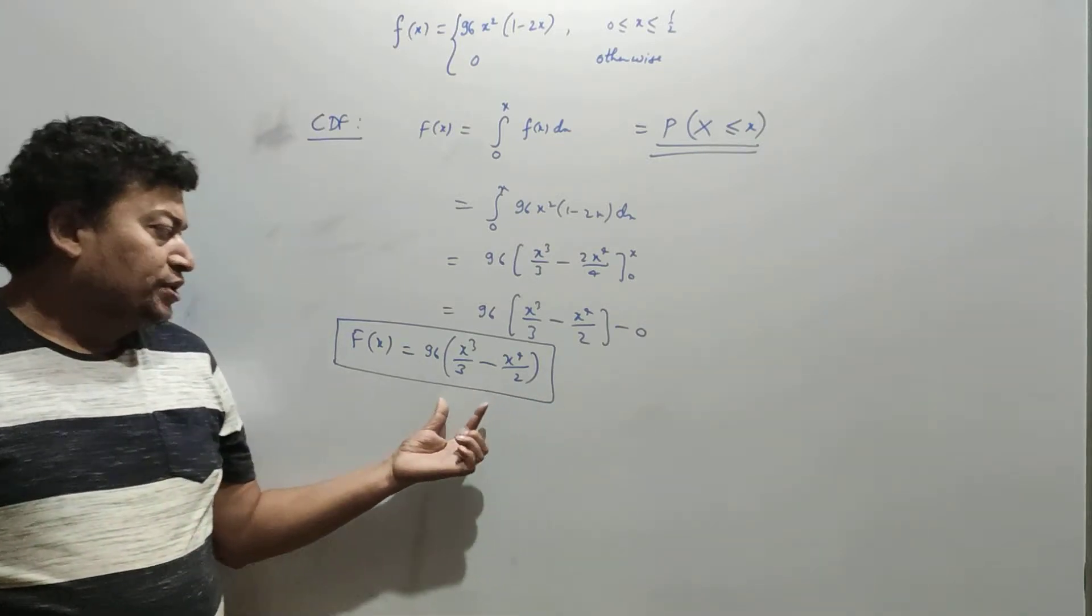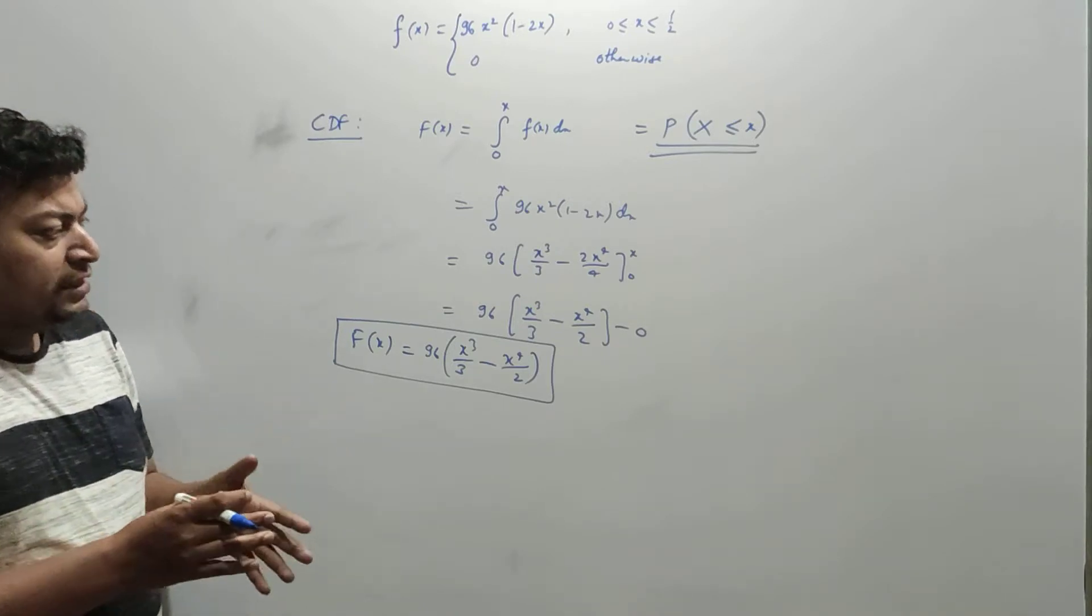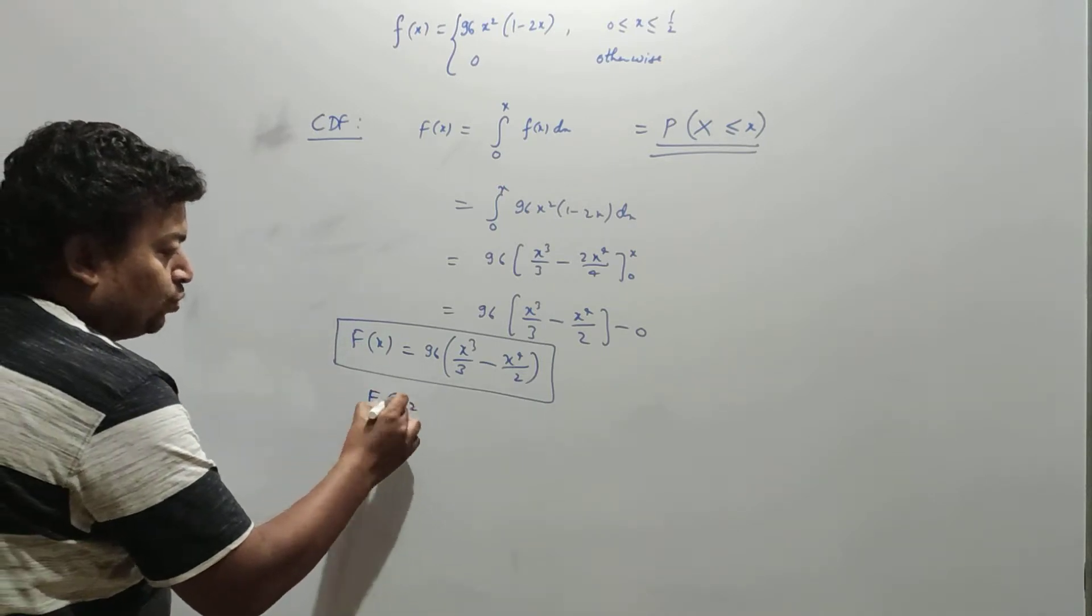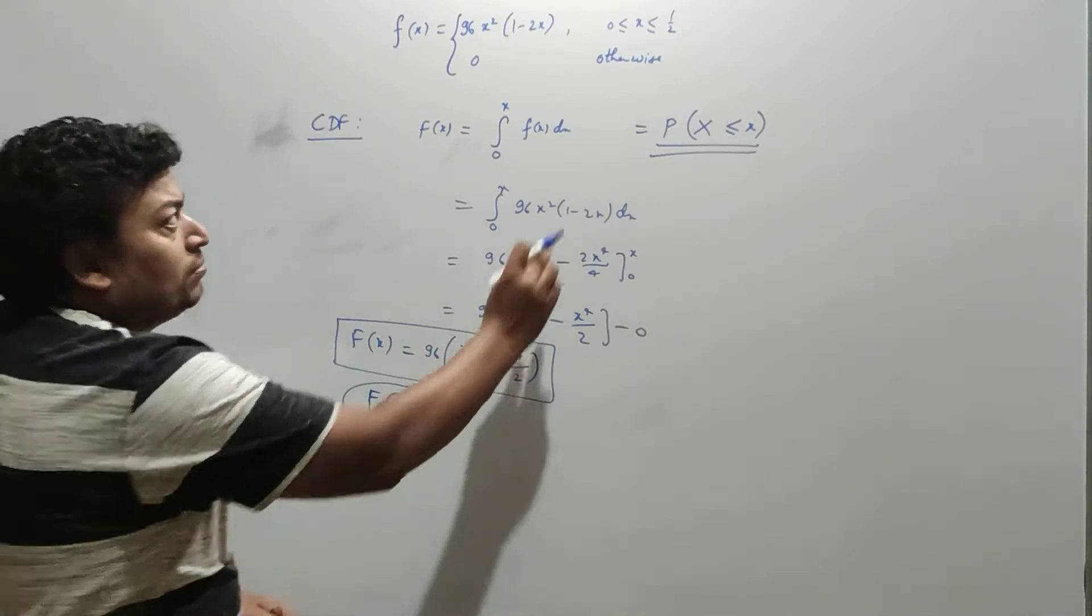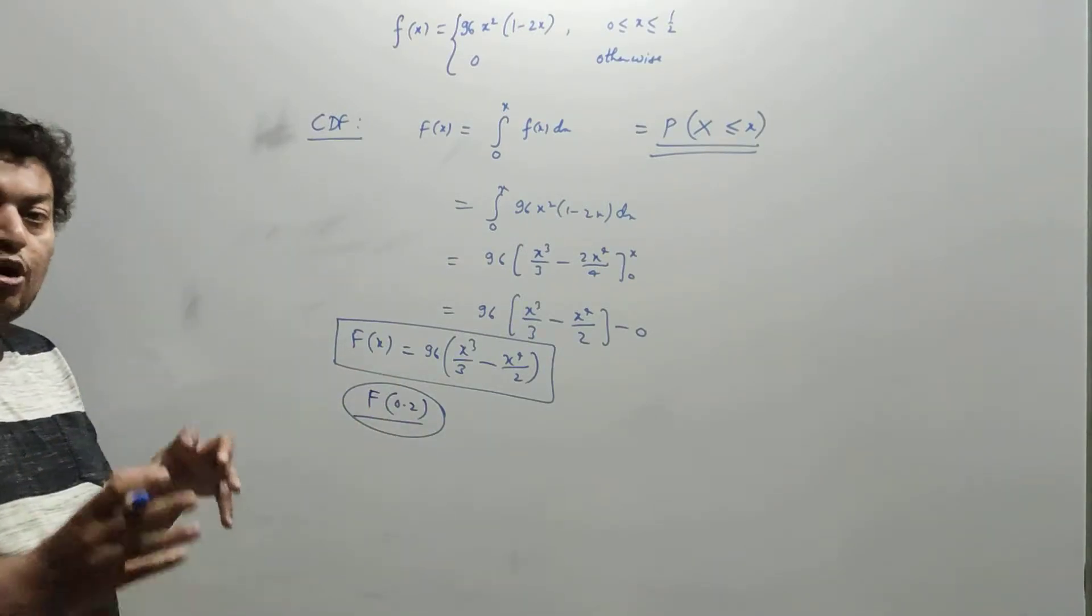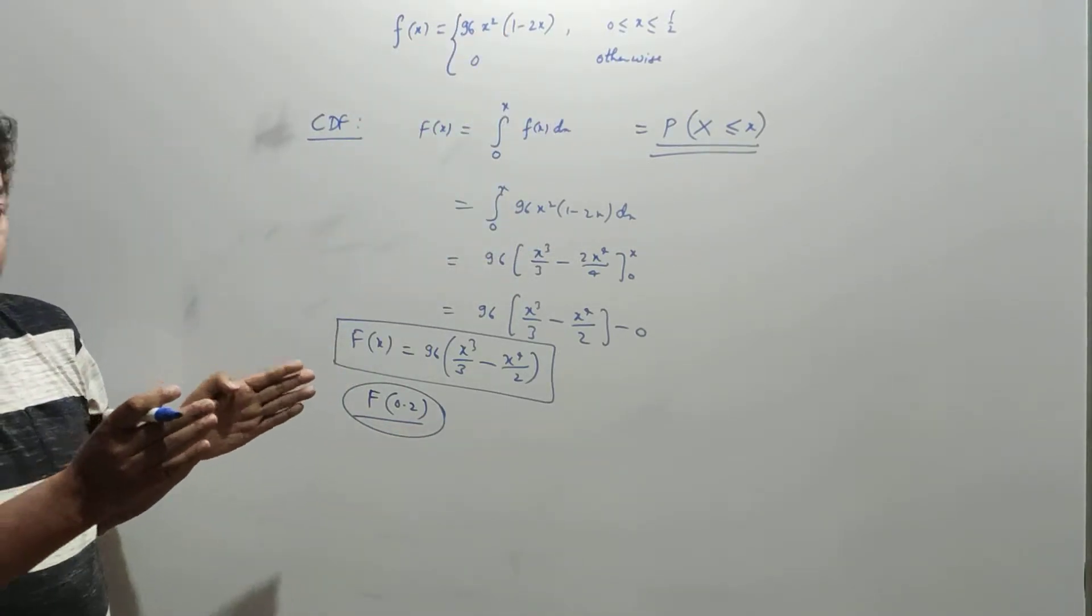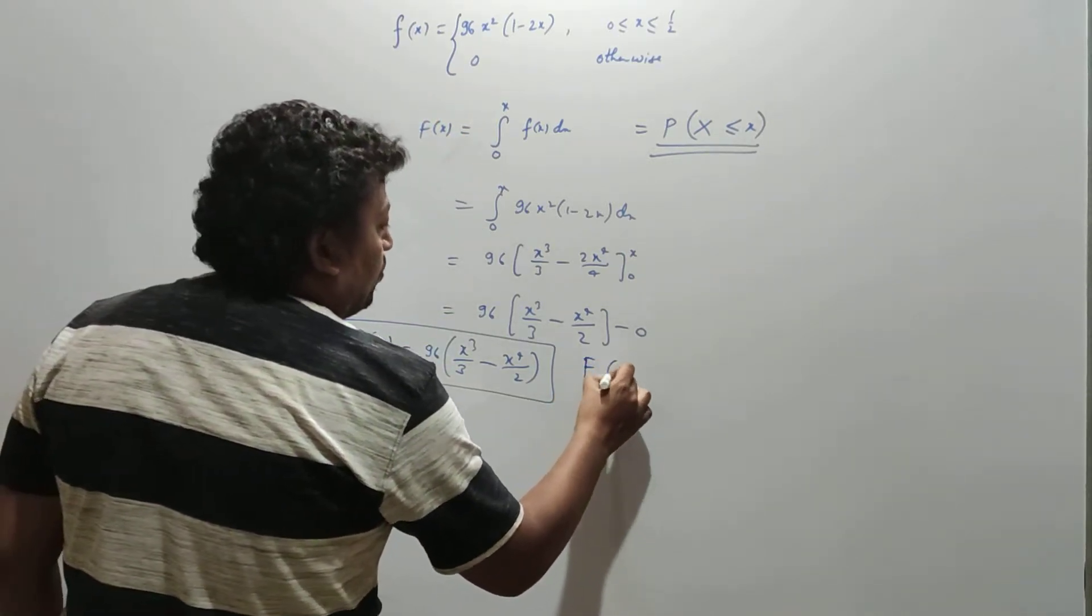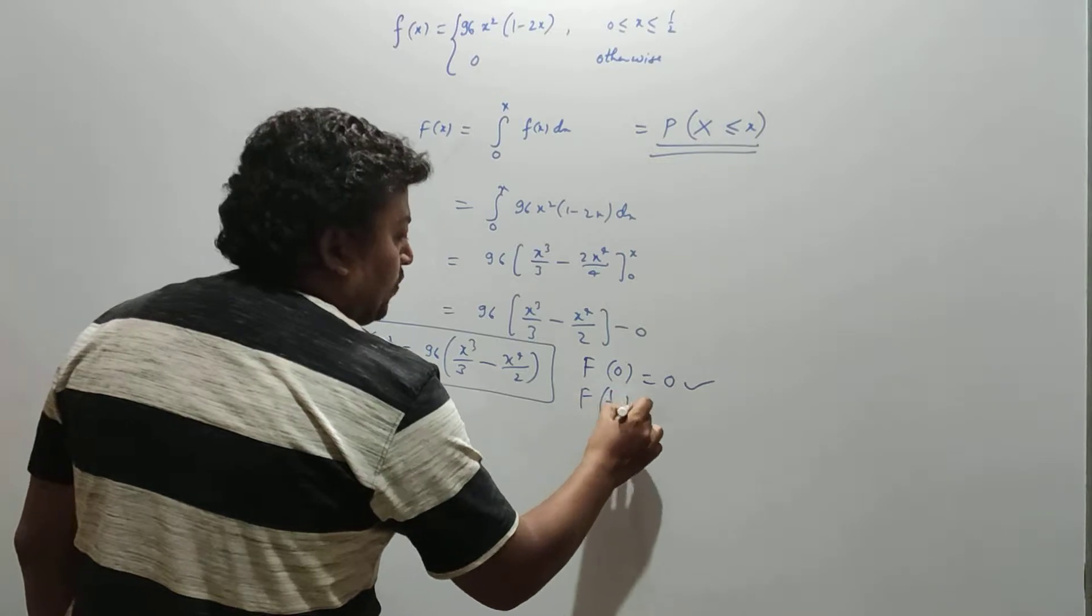Now you can cross-check your answer whenever you get CDF. Since CDF is the probability up to that point, it will always be 0 at the initial point and 1 at the final point. So we will find F(0), which is simply 0—that makes sense.